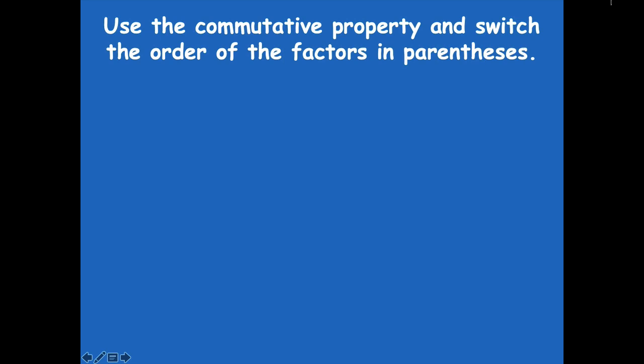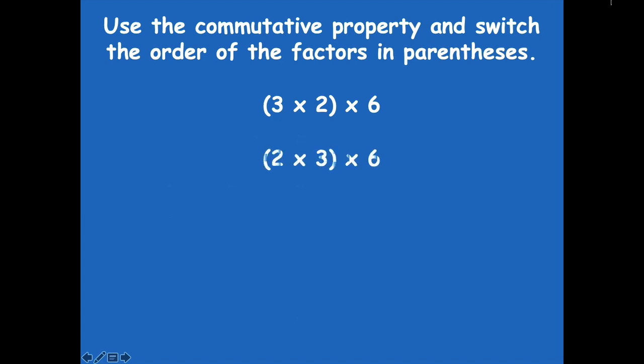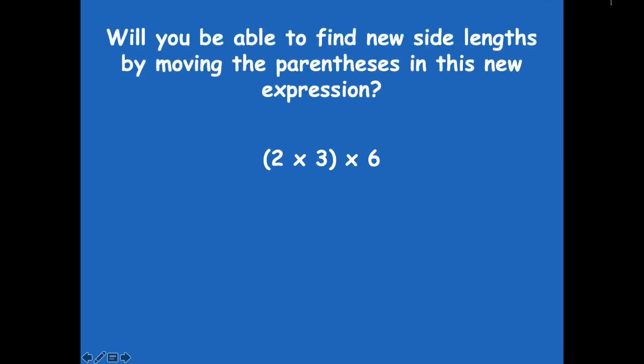Now we're going to use the commutative property and switch the order of the factors in the parentheses. We have three times two — flip-flop those and write the new equation. So you just flip-flop it: now it's two times three, in parentheses, times six. That's the commutative property. Will you be able to find new side lengths by moving the parentheses in this new expression? If I were to put the parentheses around three times six instead, are my side lengths going to change from being six by six? Will they be different?